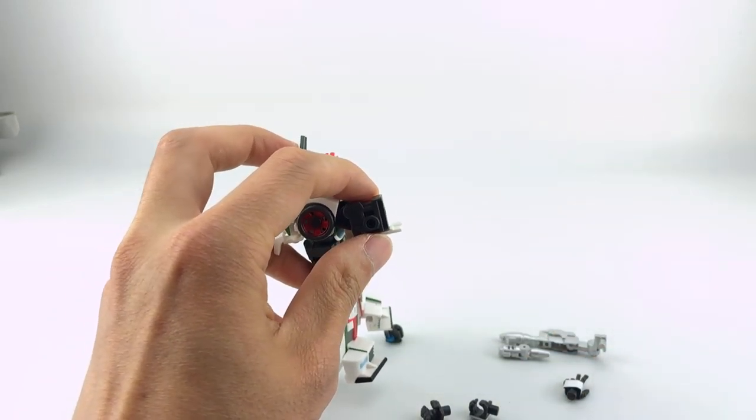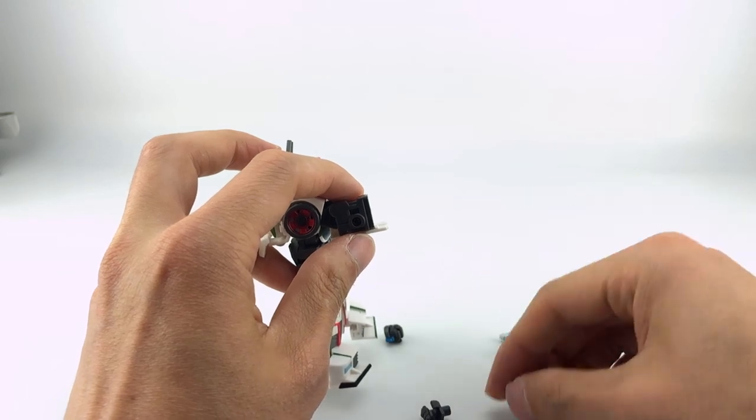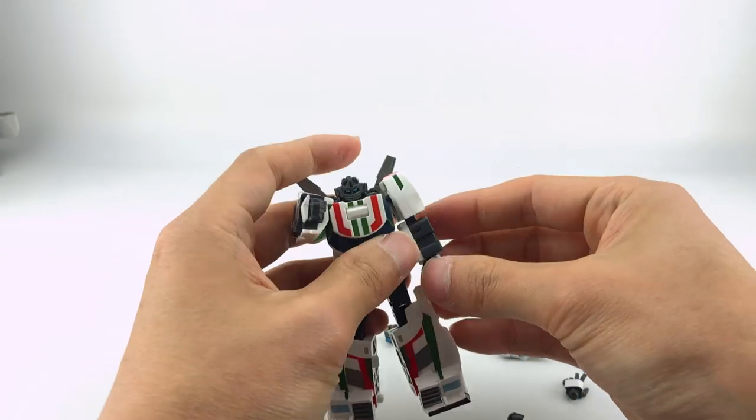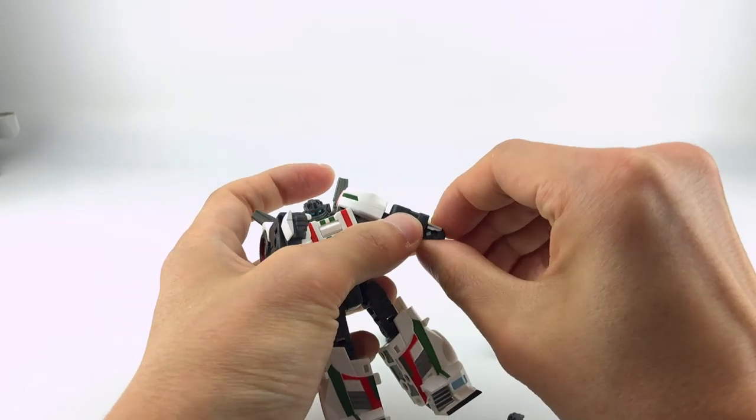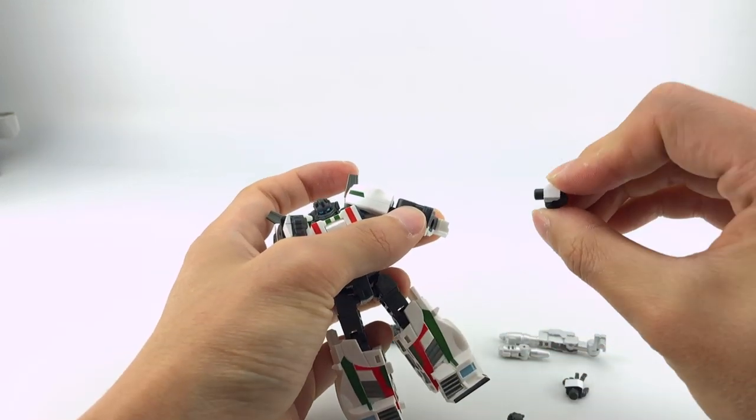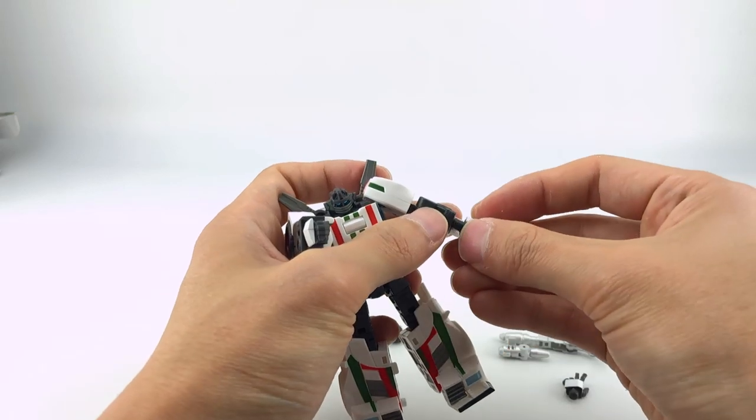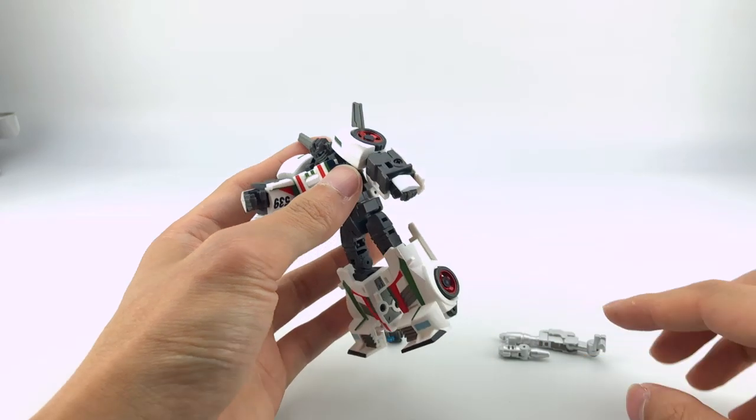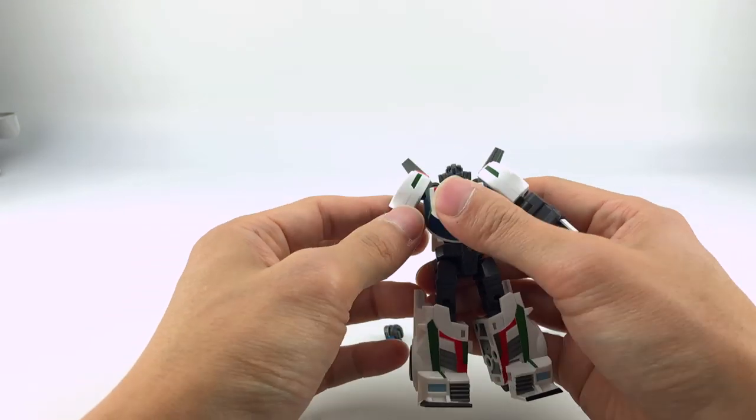But yeah, they're just on pegs. We'll go ahead and install these. If you're going to transform him into alt mode, you'll need either the closed fist or the open fist. The open fist actually worked better in hiding some of the gaps because they do have larger back panels here, so I would recommend that.